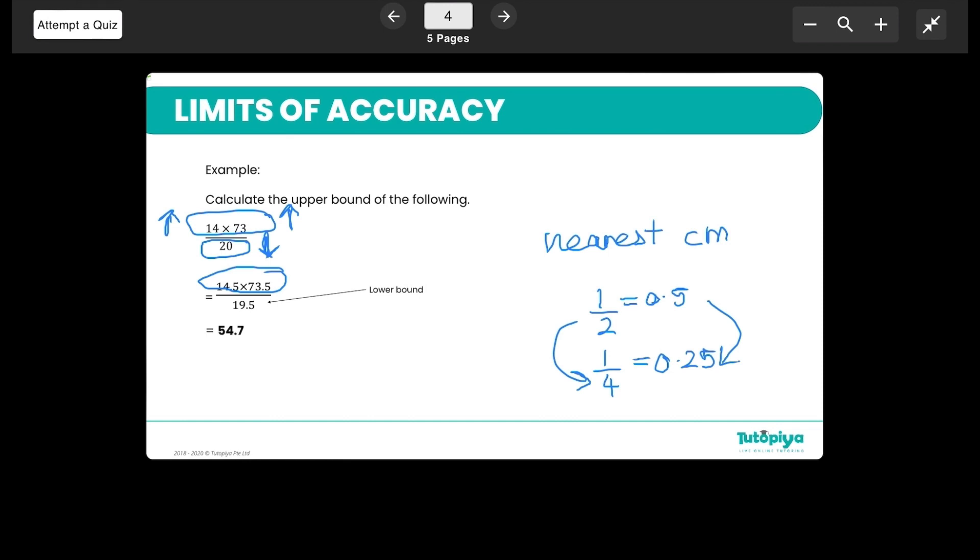So because of that I'm not going to take 20.5 for the new denominator, I'm taking 19.5. And substituting this into the calculator gives me 54.7, which is the upper bound of this calculation.